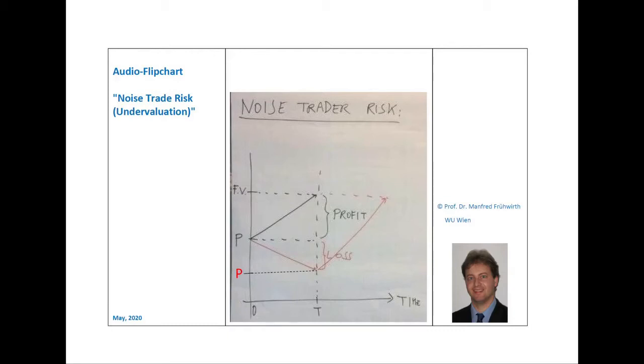The arbitrage profit is the difference between the future price, which is the fundamental value, and the original price. This is shown on the flip chart as profit. This is the neoclassical argumentation shown in black.